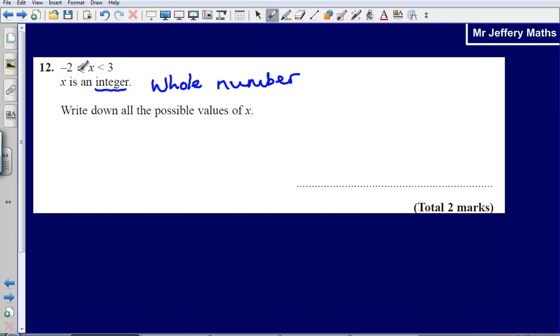So x could be, because we're told that x is greater than minus 2, but could also be equal to it as well, one of our answers is minus 2. Remember we're asking all possible values of x, what could it possibly be? So minus 2 is one of those answers.